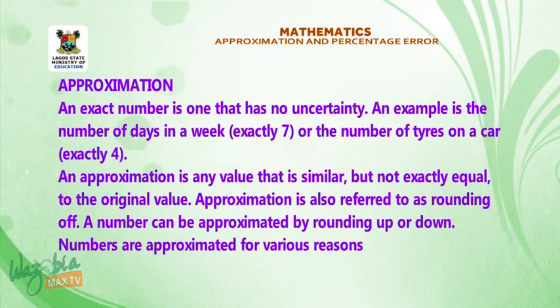Approximation. An exact number is one that has no uncertainty. An example is the number of days in a week, exactly 7, or the number of tires on a car, exactly 4. An approximation is any value that is similar, but not exactly equal to the original value. Approximation is also referred to as rounding off. A number can be approximated by rounding up or down.